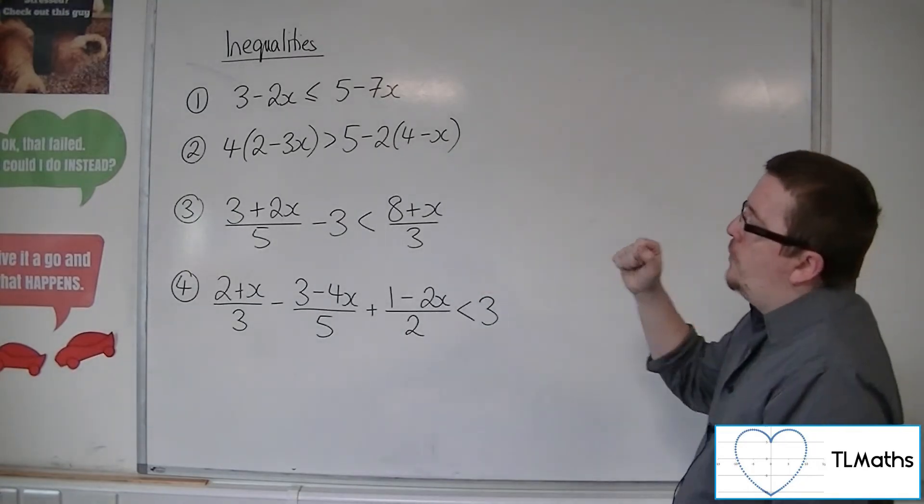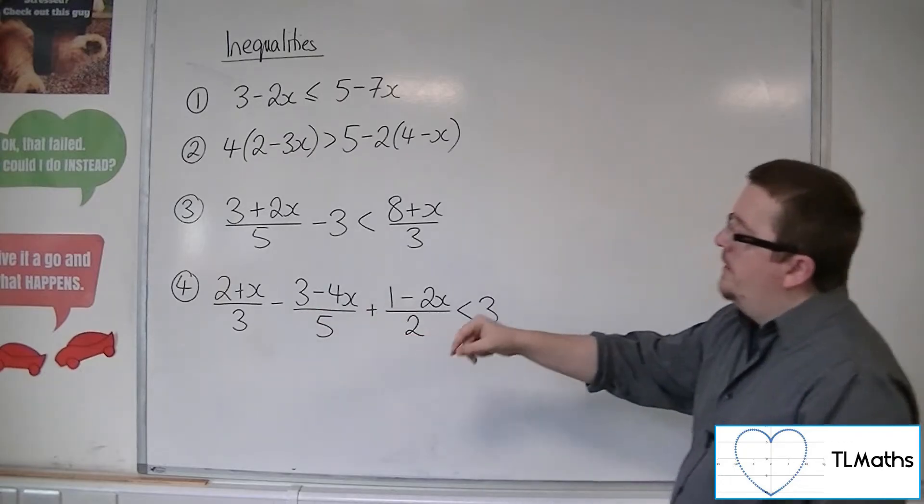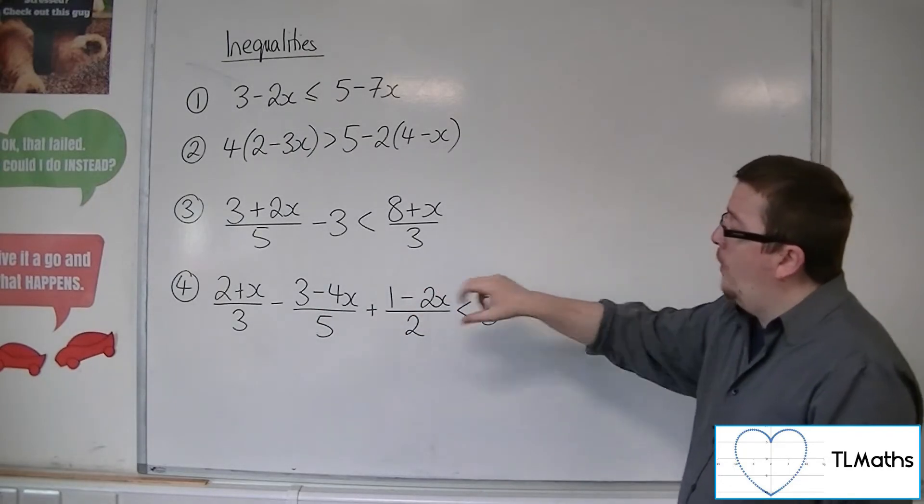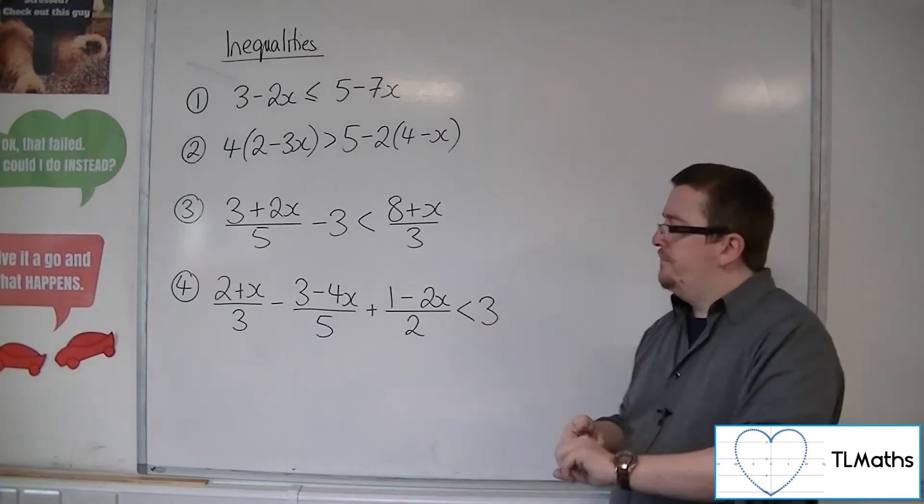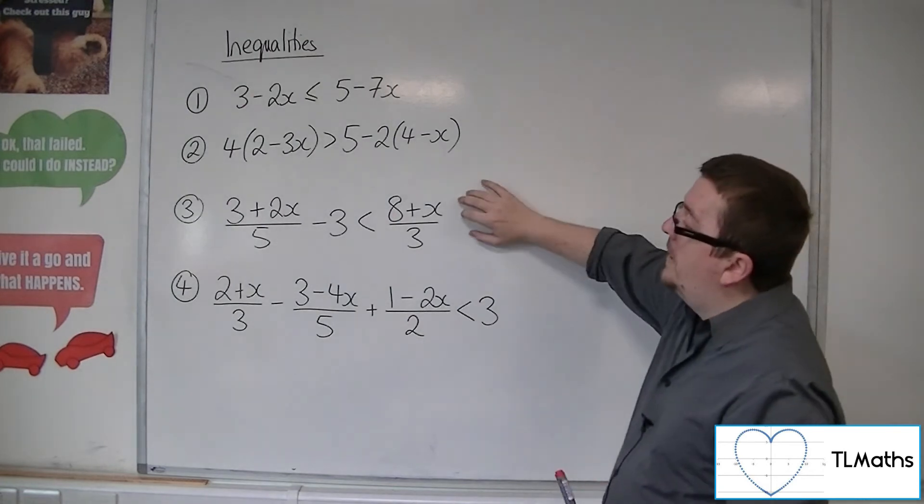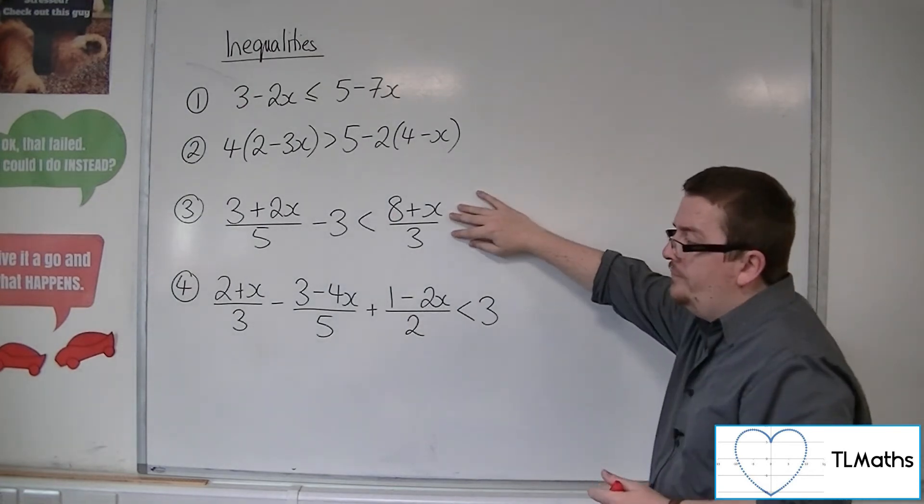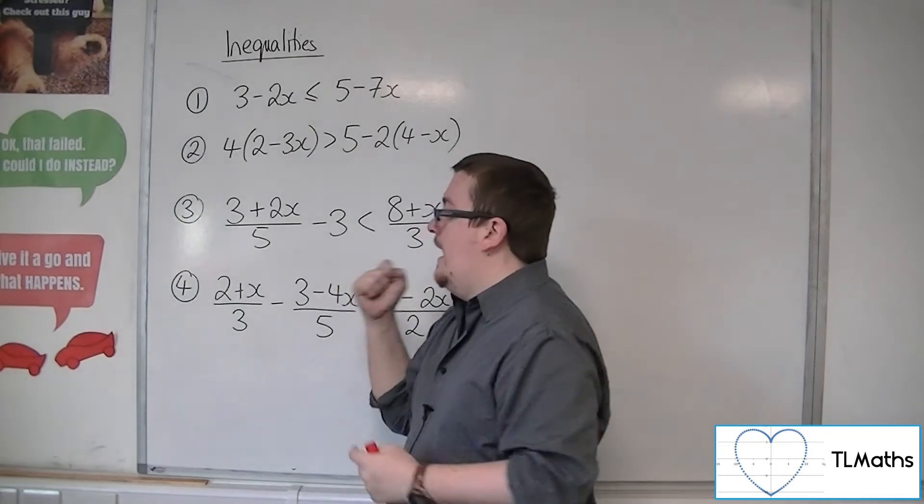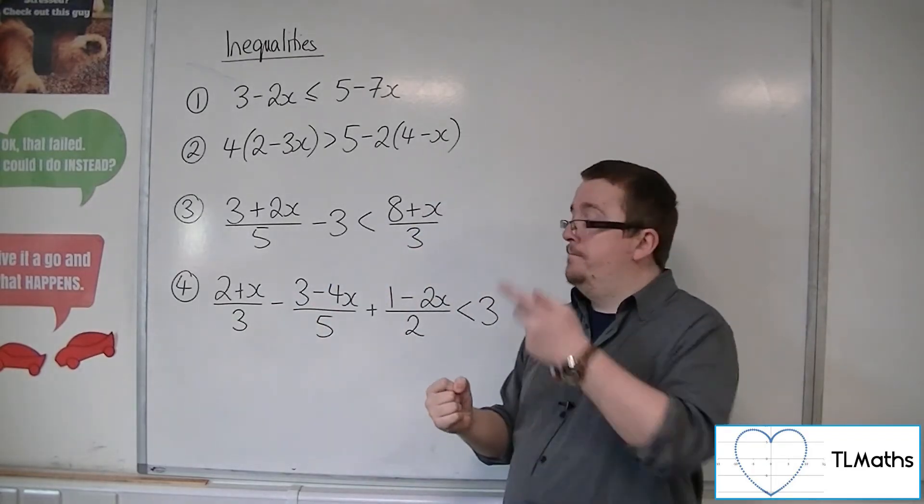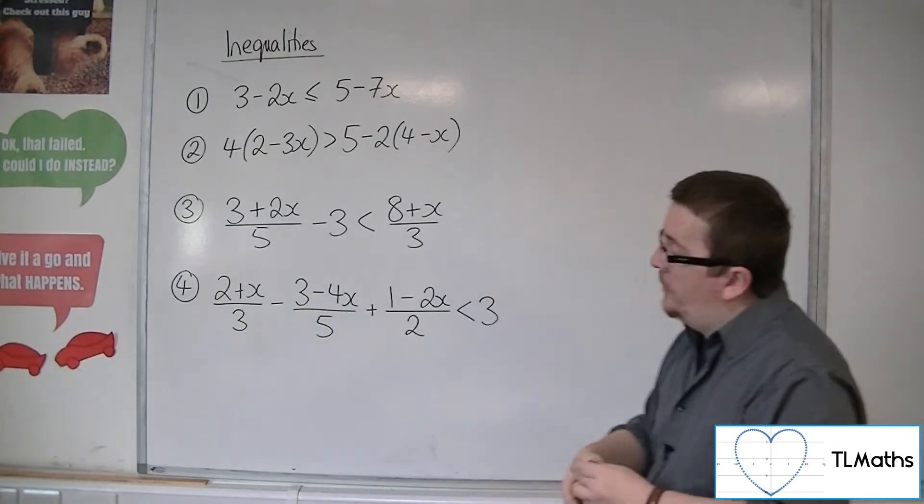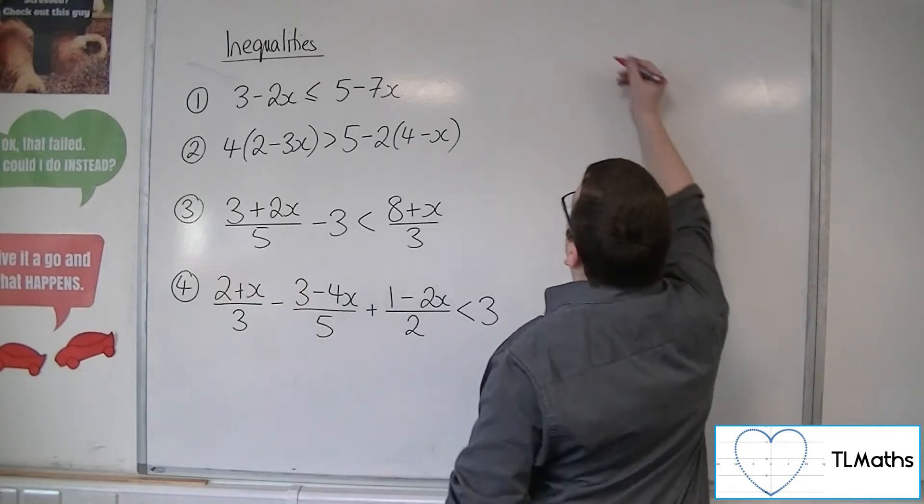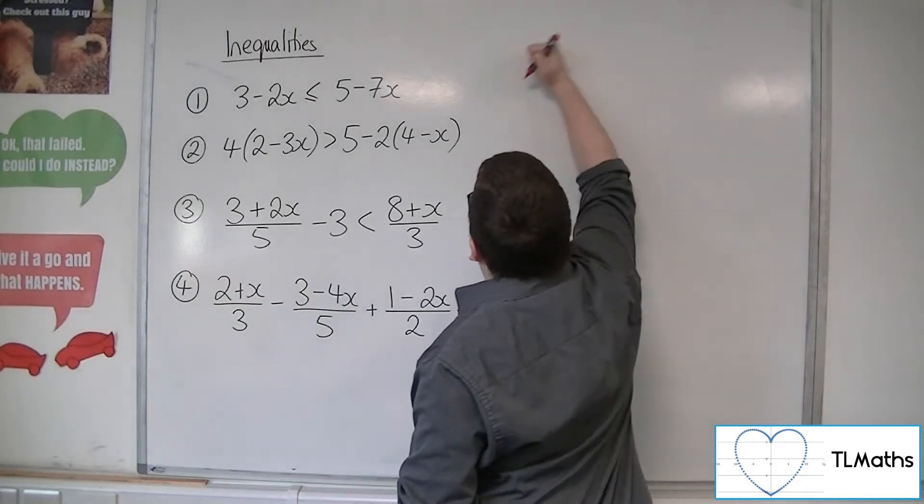So number four, we've got 2 plus x over 3, take away 3 minus 4x over 5 plus 1 minus 2x over 2 is less than 3. Now, we're going to deal with this in much the same way as I dealt with number 3. So I'm going to multiply everything by each of those denominators in turn. So I'm going to multiply everything through by 3 to start off with. So I've got 2 plus x over 3 multiplied through by 3 is just 2 plus x.